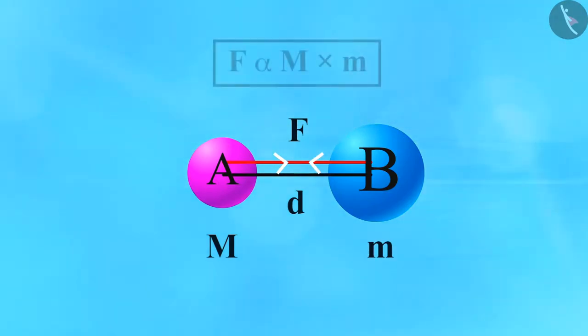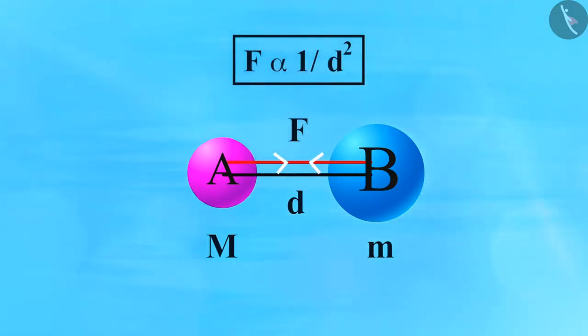So mathematically we can write it as F directly proportional to M multiplied by m. Now the force is inversely proportional to the square of the distance between the two objects, i.e., F directly proportional to 1 upon d square.